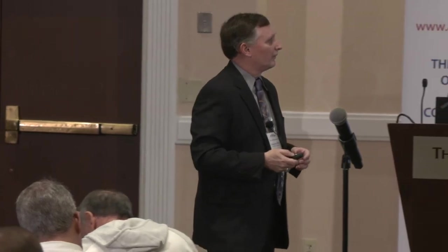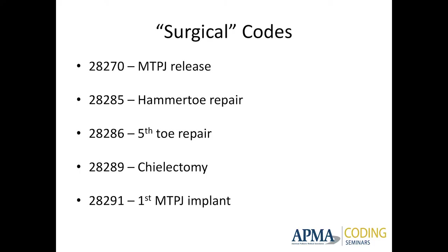Tendon lengthening is included in the hammer toe code. 28289 is cheilectomy — taking off the bumps of the first metatarsophalangeal joint. It includes both sides of the joint, metatarsal and phalangeal side, cleaning all that down. 28291 is cheilectomy with a metatarsophalangeal joint implant — doing a cheilectomy, cleaning it off, taking part of the base, and putting either a hemi or a total implant in.